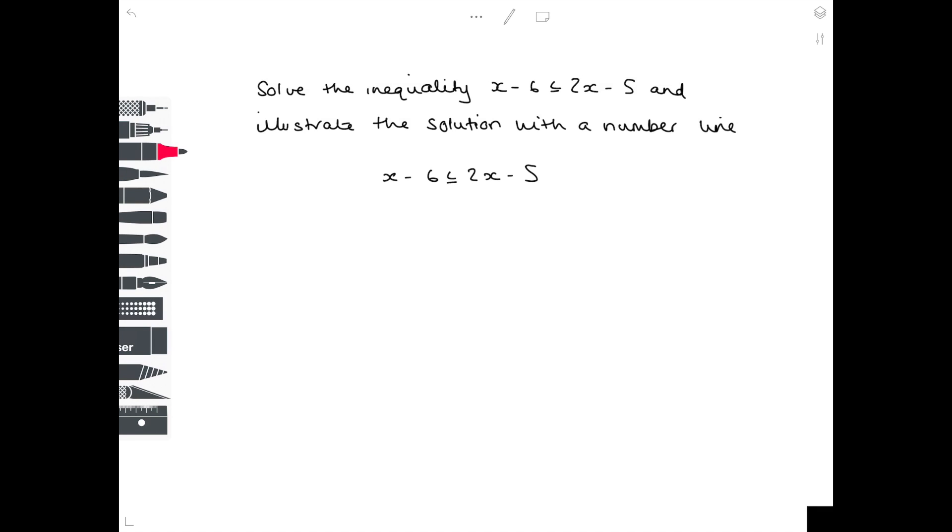Let's start by getting all the x's on the right-hand side. So how do we get rid of them on the left-hand side? By simply taking away x. And we need to do that to both sides. Then we need to get rid of the minus 5 on the right-hand side. How do we do that? By adding 5. And therefore we know that x must be greater than or equal to minus 1.